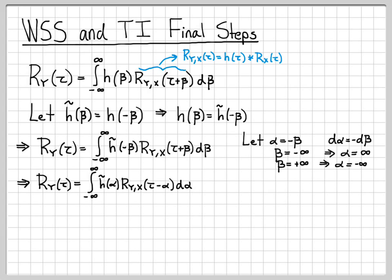The reason we like this form is that it's more clearly a convolution integral — it looks just like the convolution of h(α) with the cross-correlation function. So this is a convolution integral, and it looks like the convolution of h-tilde with our cross-correlation function, which we can write compactly.